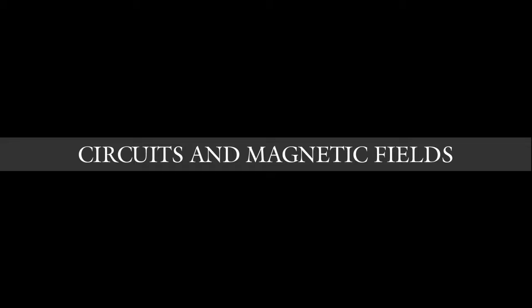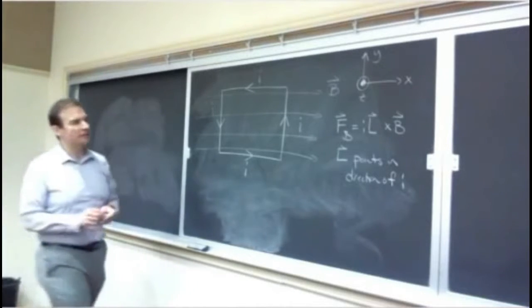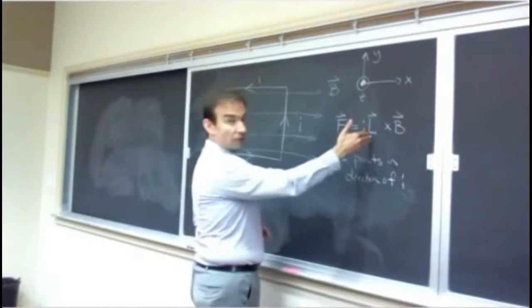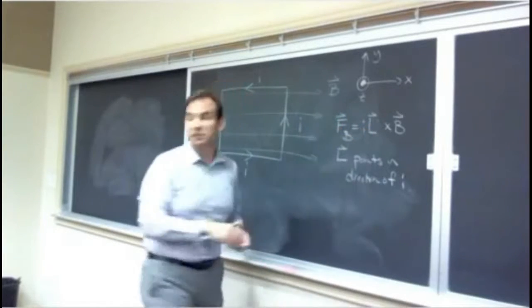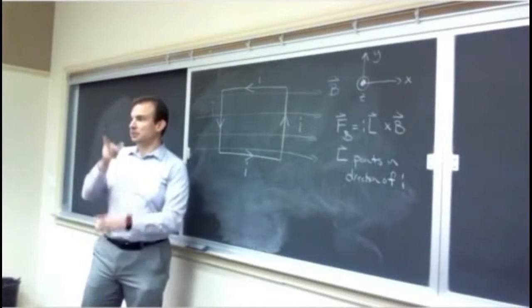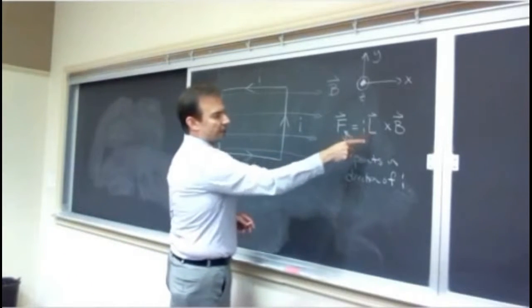I want to build on this equation and go one step further, introducing a concept that will be helpful in the discussion of electric currents, magnetism, and so forth. We start from the force equation on a current-carrying wire: the force is given by the magnitude of the current i times a vector L, which has units of meters. It's a length vector representing the length of the wire exposed to the magnetic field.